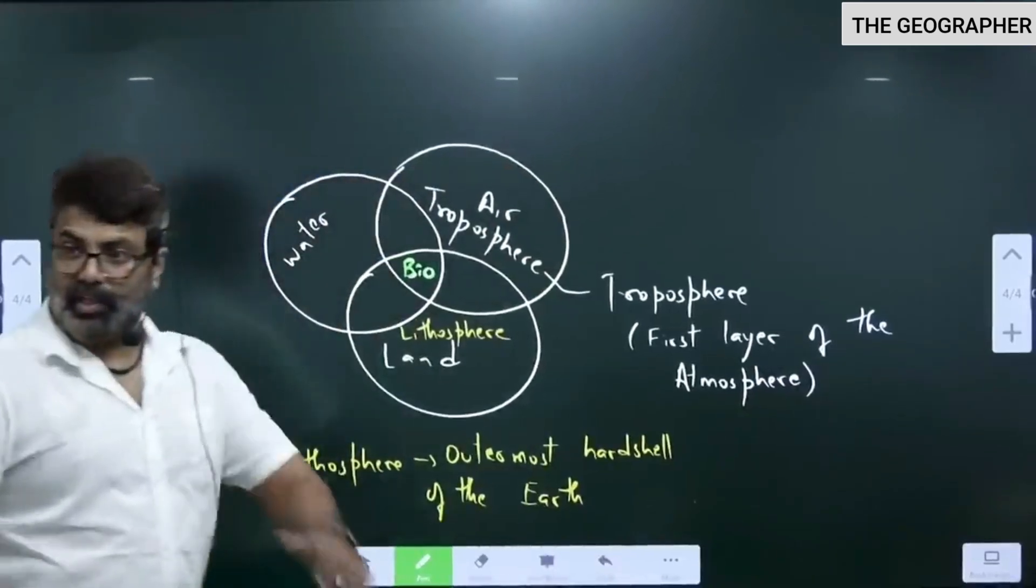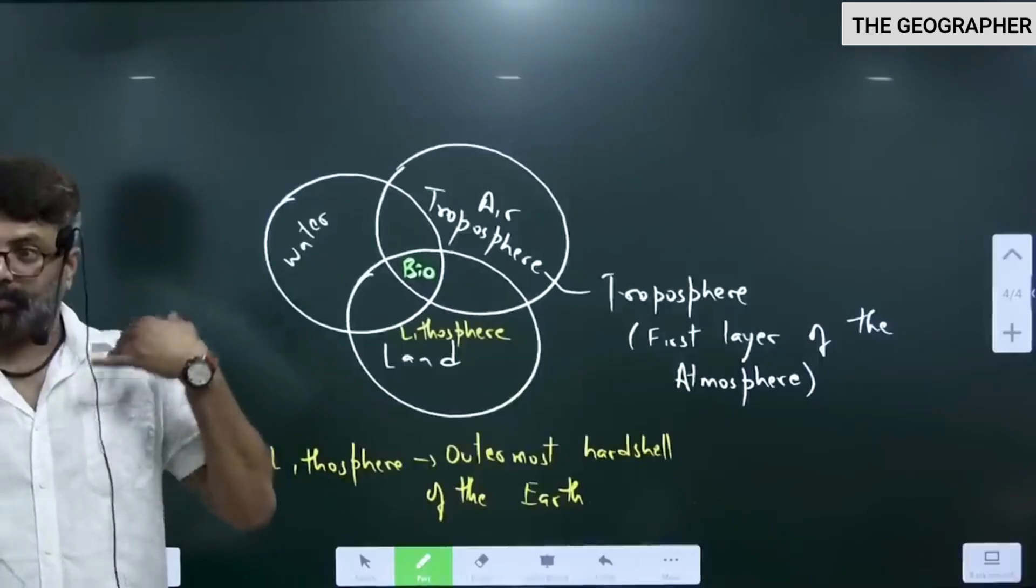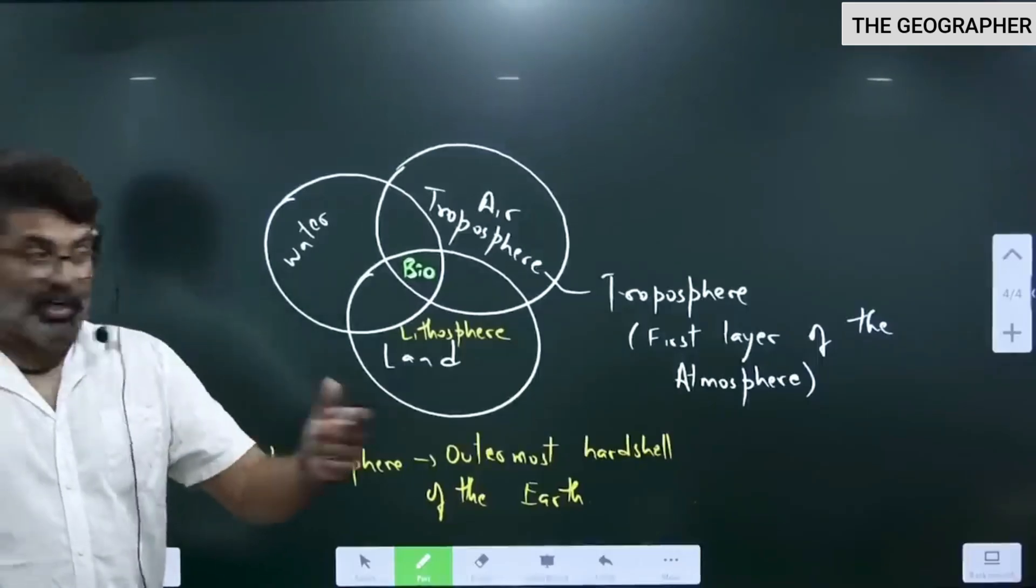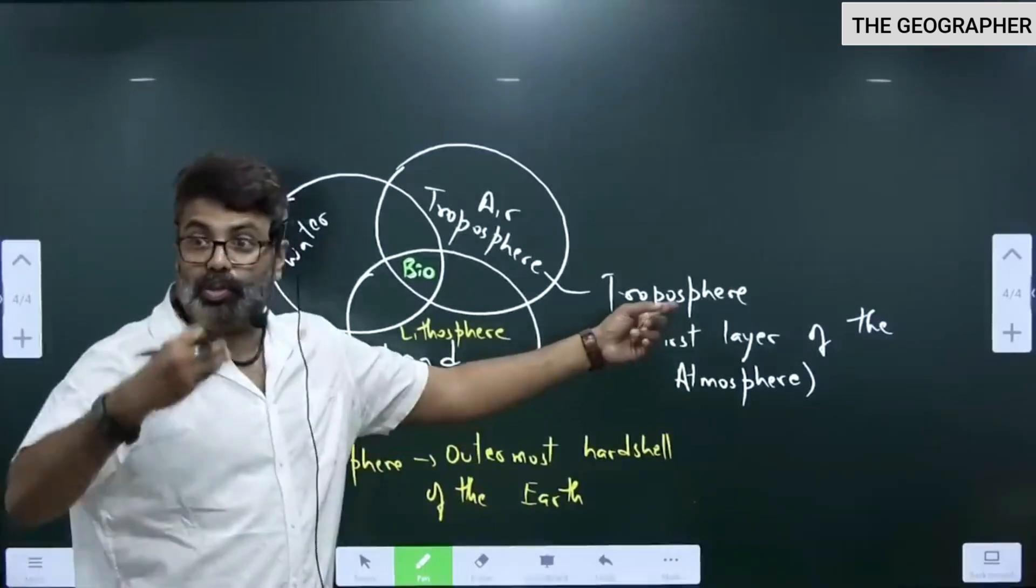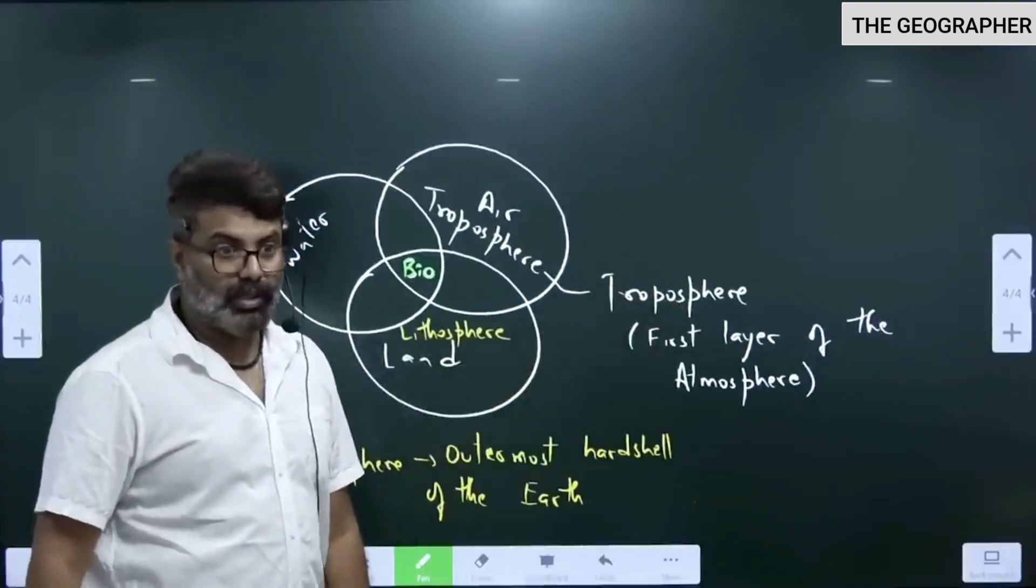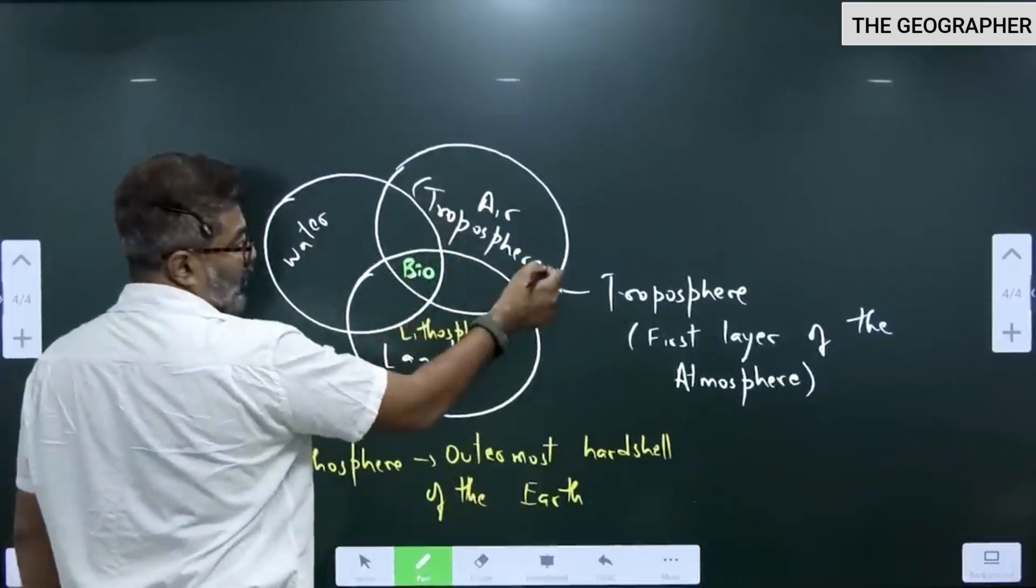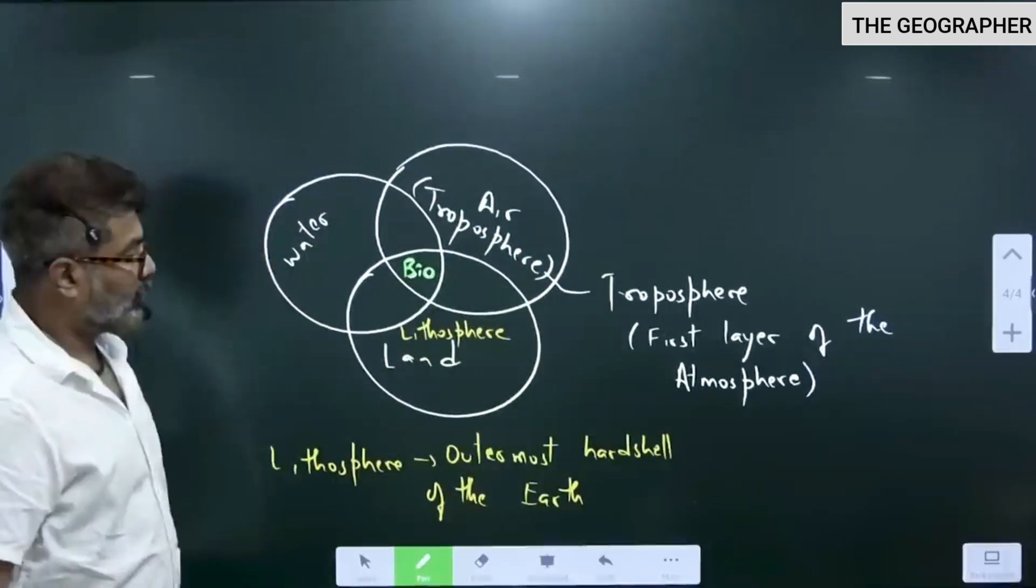Troposphere is found where? Just above the earth surface. Every second of our life we are breathing in, breathing out. From which layer? Troposphere. So most important layer of the atmosphere is troposphere. So air we study in troposphere.